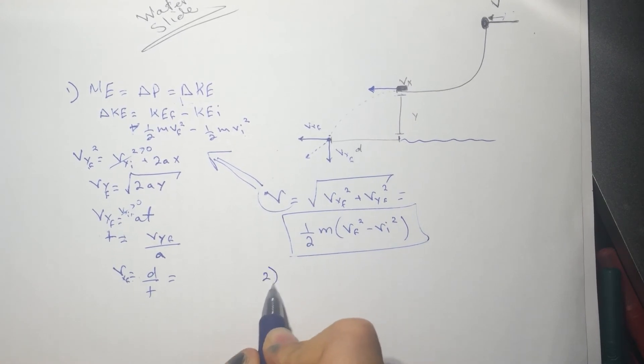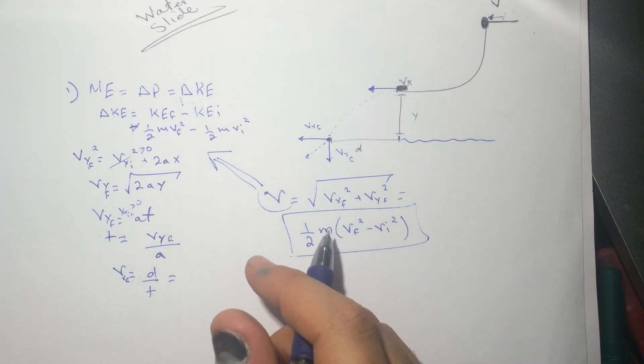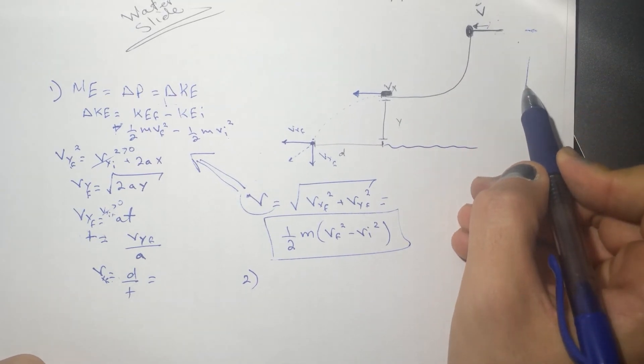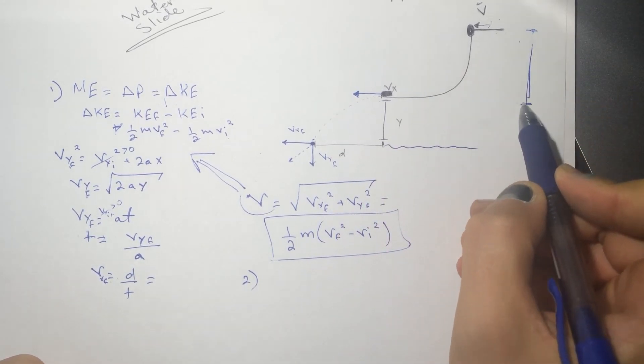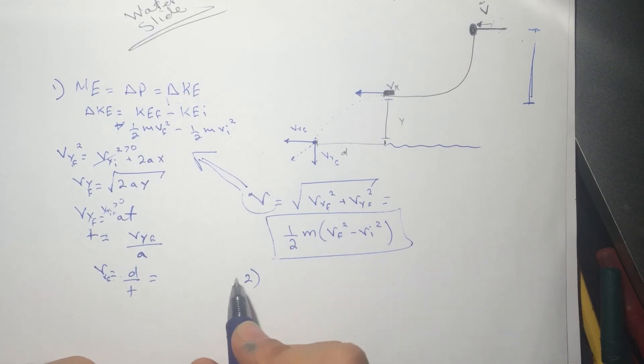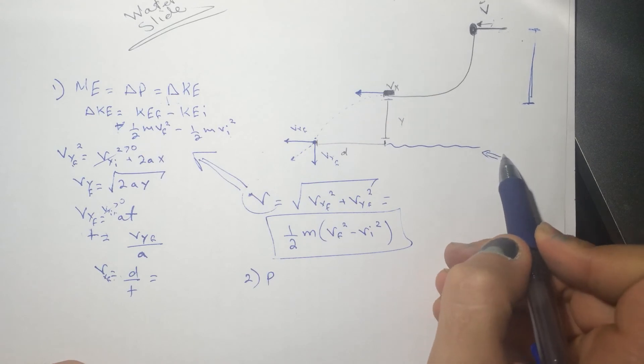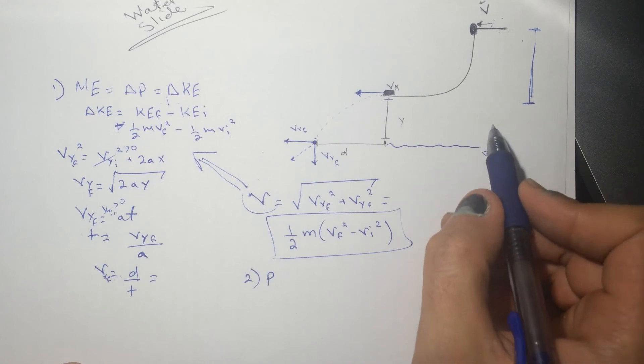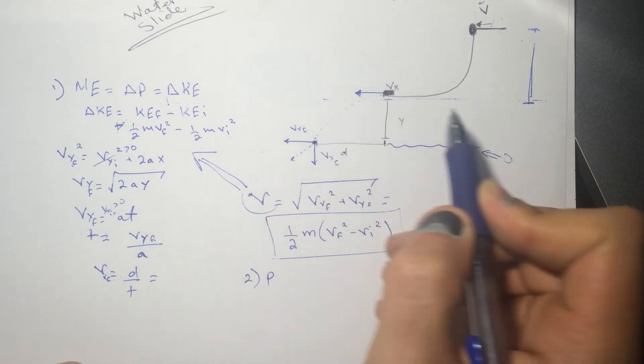All right. So the second one is how high is the top of the slide above the bottom of the slide. So they want the height of the slide from here down to here. So just here to here. We can say that the, well, I can assume, well, they assume that the zero is here. Well, in this case, to answer this question, like an easier way, well, that's my way at least, is that I'm going to set the bottom of the slide as the zero.